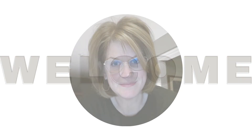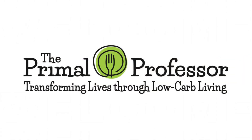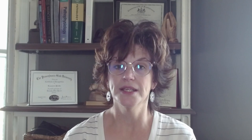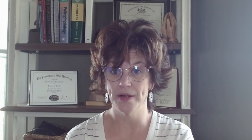So today I'm going to explain what lipotoxicity is, how it shows up, and most importantly what you can do about it. Lipotoxicity happens when fat is stored in the wrong places. Fat should be stored in your adipose tissue — that's the medical term for your fat cells — but when those cells can't hold any more, the fat begins to spill over into the organs. It shows up as fatty liver, beta cell dysfunction in your pancreas, and insulin resistance in your muscles, even fatty infiltrations of the heart muscle.